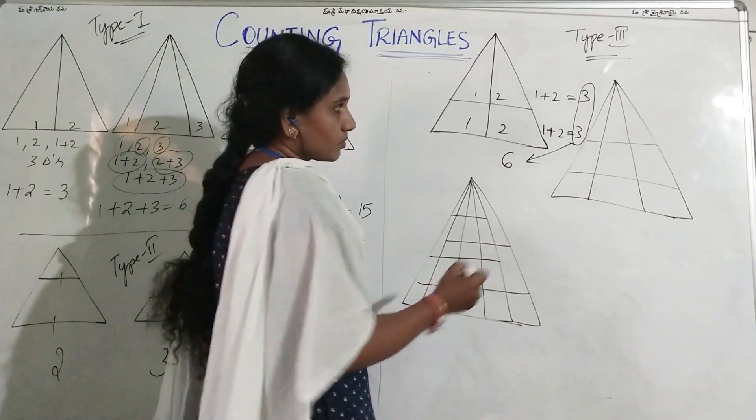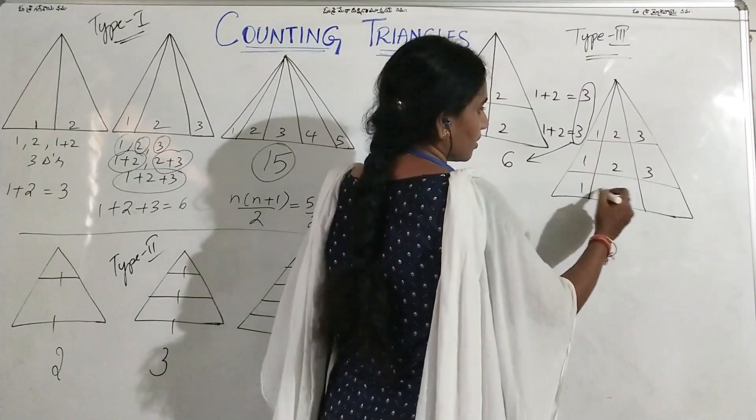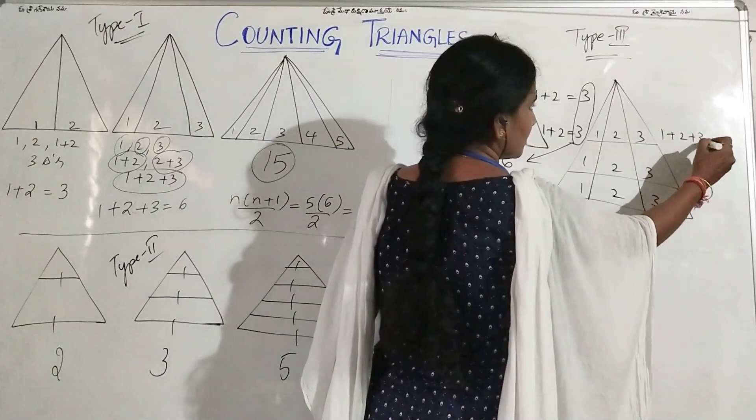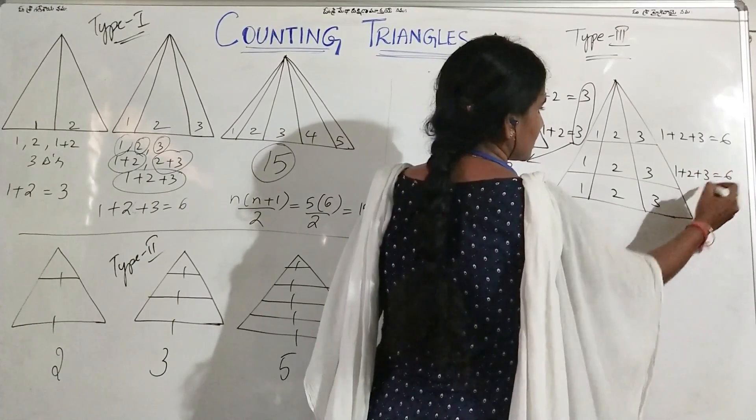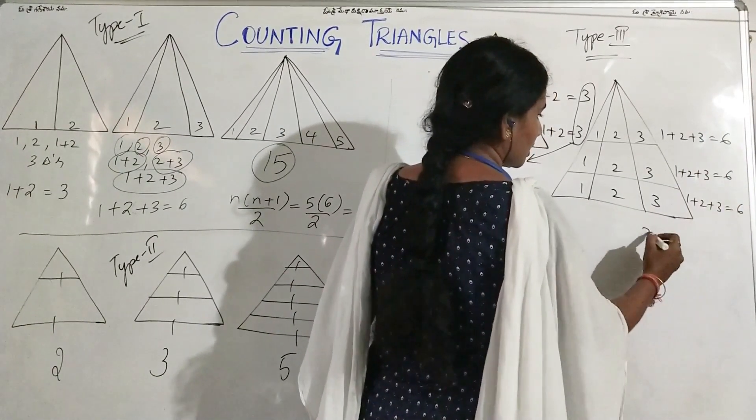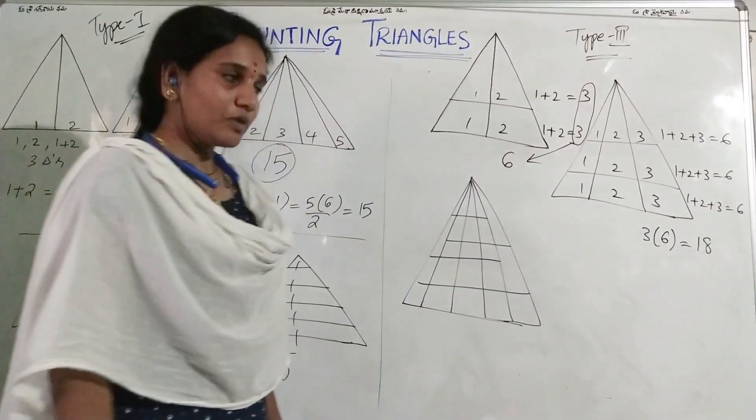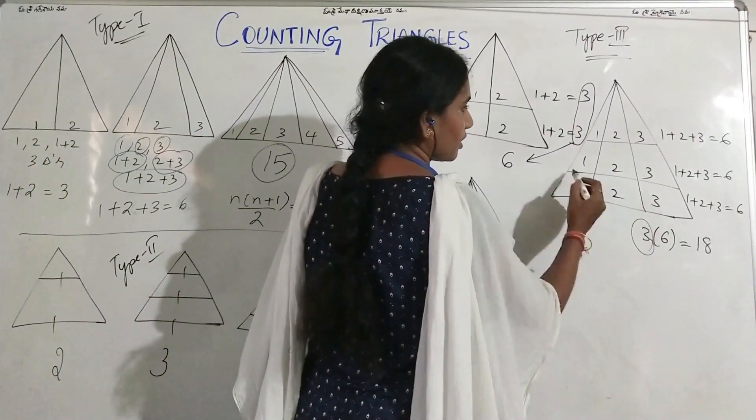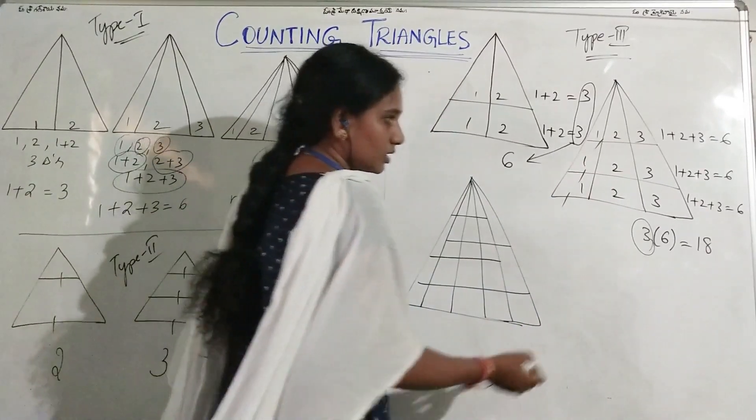So look at this figure. Here again similar, give the numbering. Now with the first base, it is 1 plus 2 plus 3 which is 6. And here it is again 1 plus 2 plus 3 which is 6. And 1 plus 2 plus 3 which is also 6. So 6 into 3, 3 times of 6 is 18. So if you observe here, this 3 is representing the number of horizontal lines. 1, 2, 3.